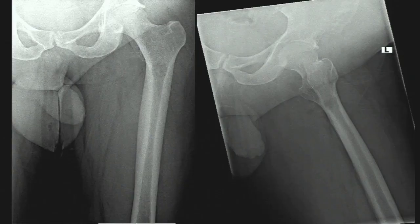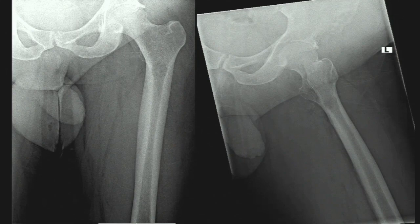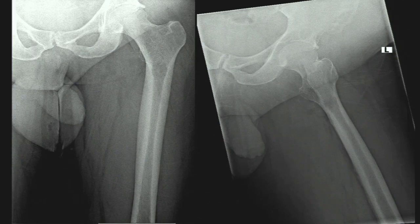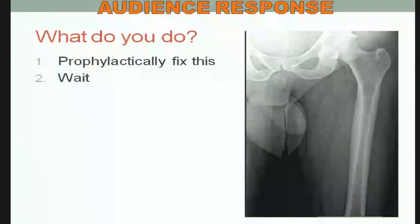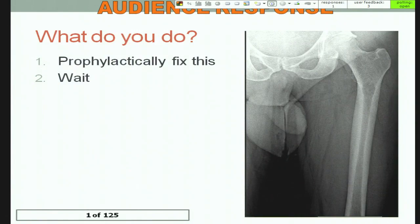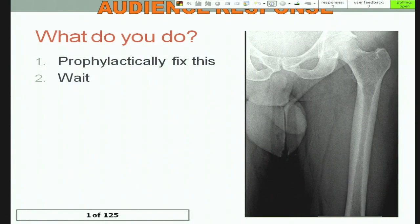Case two: a 47-year-old male in active treatment for multiple myeloma with new onset of left hip pain and pain with weight bearing. His x-rays show maybe a little lysis on the medial calcar area — no grossly obvious large cortical destruction, but the lesser trochanter appears involved. He has weight-bearing functional pain, and has had a rod placed on the right side for a similar issue. The question is: would you prophylactically fix this, or would you wait? 86% of the audience said fix it, 14% said wait.